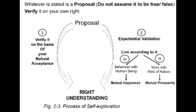The first part of self-exploration is to verify the proposal on the basis of our natural acceptance. Once we have verified that a proposal is naturally acceptable to us, we are sure it is something we would like to live with. The second part is experiential validation — trying to live according to the proposal. In living, there are two parts: one is behavior with other human beings, and the second is work with the rest of nature. When we are behaving with human beings on the basis of this proposal, we want to verify whether it leads to mutual happiness or not.